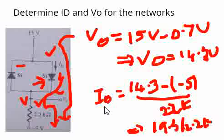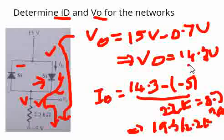This will be the current ID. We already know V naught, which is nothing but 14.3 volts. So this is how we calculate the ID and V naught in this circuit.